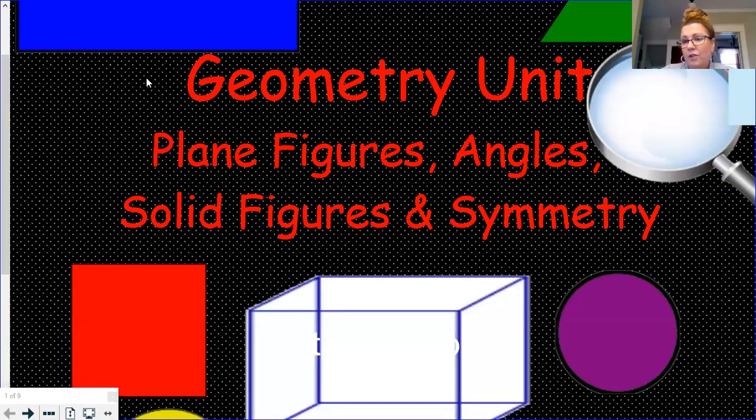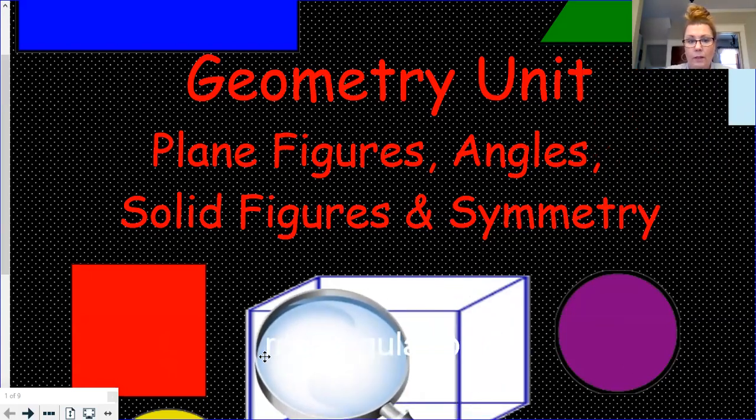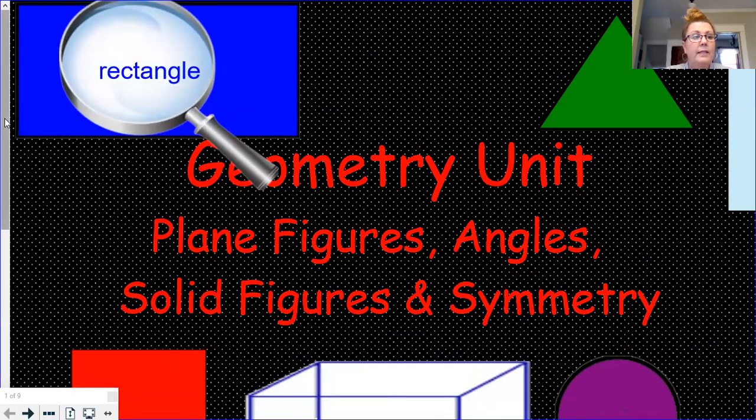So geometry is shapes like you've been thinking about your whole life, but it's also about shapes called plane figures. And those are three-dimensional and they have more than one side to them. Like this rectangular prism down here, which has more than one side. This rectangle is a plane shape because it's just a plain old shape.